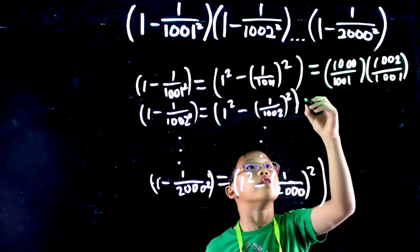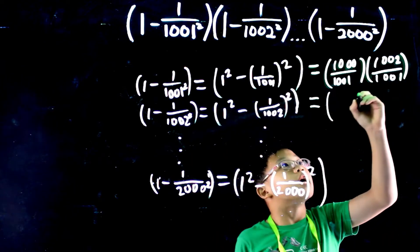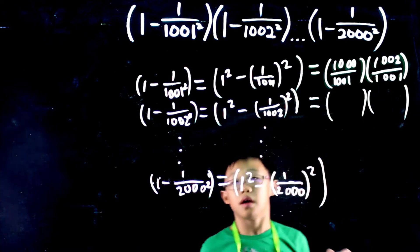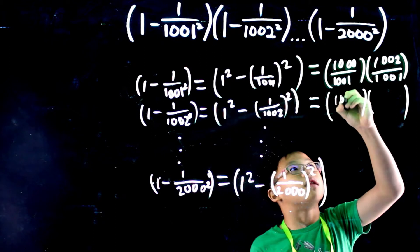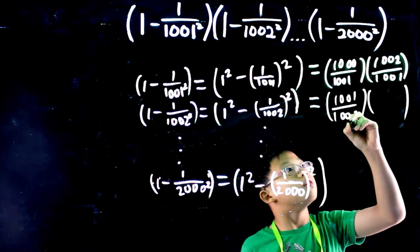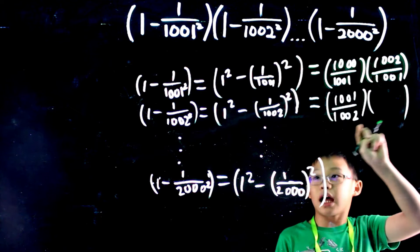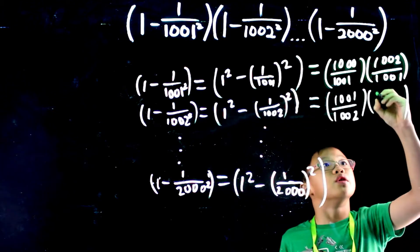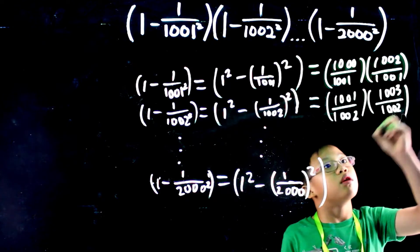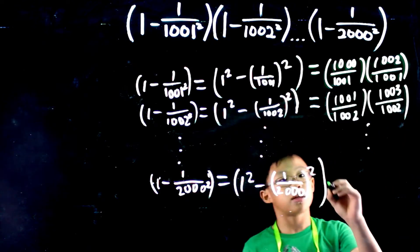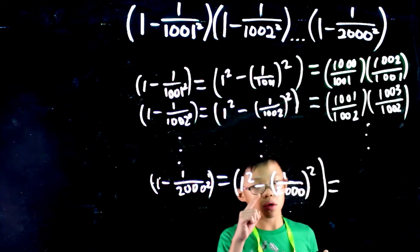And it's the same for this. We know that a minus b times a plus b which means it is equal to a minus b which is 1001 over 1002 times a plus b which is 1003 over 1002. And this continues down until we reach 2000.